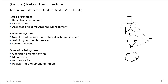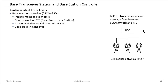We are in the radio subsystem, concentrating on the base transceiver station and the base station controller. This part here — the antenna, so to say — and the base station controller, which is controlling these base transceiver stations. In this area of the network, the two main components are the base station controller and the base transceiver station.